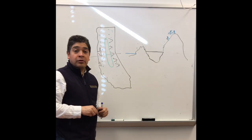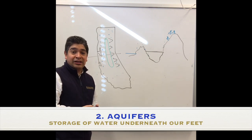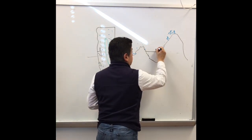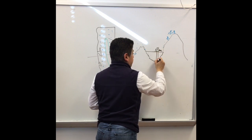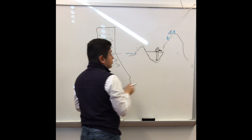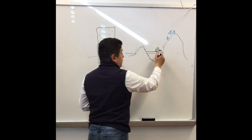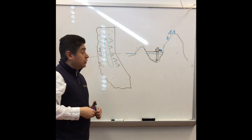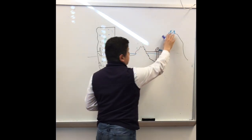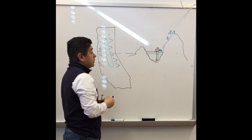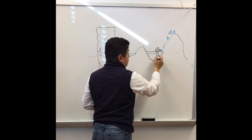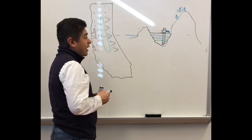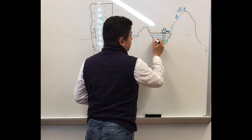In the Central Valley, we get our water mostly from aquifers. Aquifers are storage of water underneath our feet, and we can withdraw water from them. During the drought, we withdrew most of our water from the aquifers to provide water for cities and agriculture. Because we didn't have rain or snow, we were taking water from the ground, and the water table — the water storage of the aquifers — was going down.